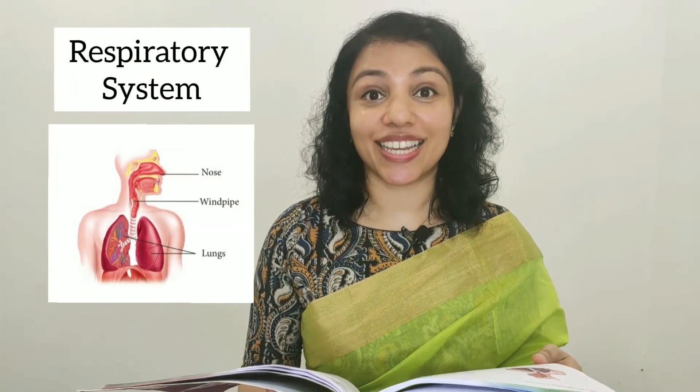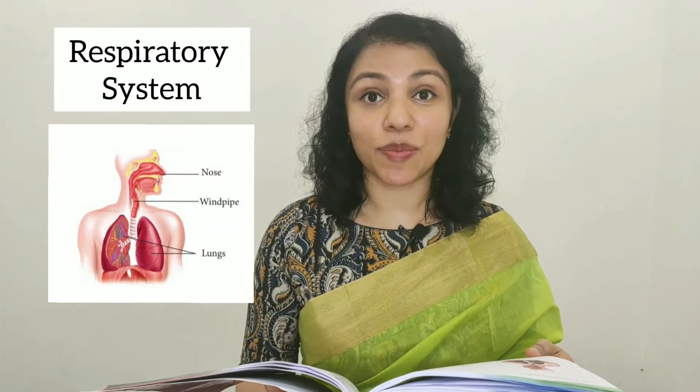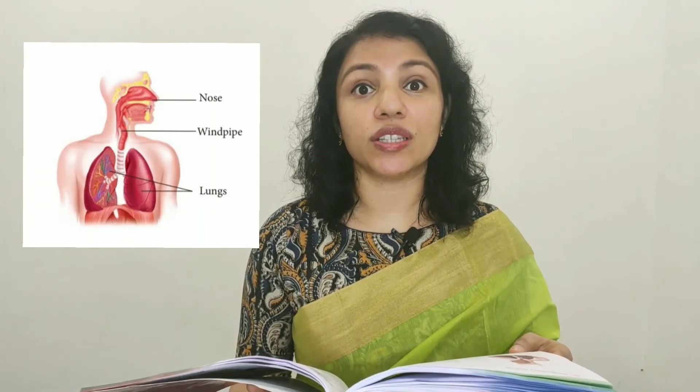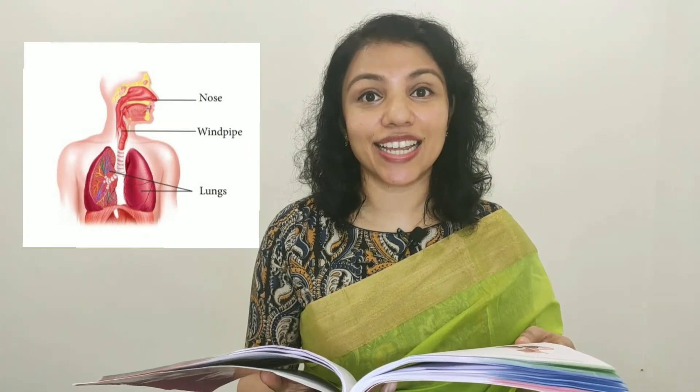Next, let's look at the respiratory system. The respiratory system helps us to breathe and stay alive. When we breathe, air containing various gases goes into our body through our nostrils, travels through the windpipe, and gets into the lungs. In the lungs, oxygen is taken in and sent to the blood, and the rest of the gases are exhaled through the nostrils. Oxygen is very important as it helps us produce energy.